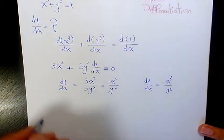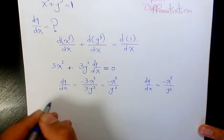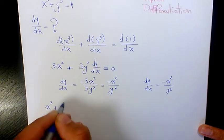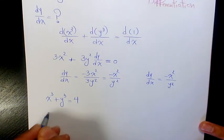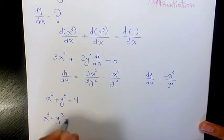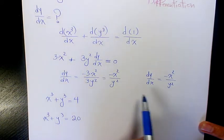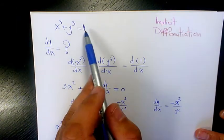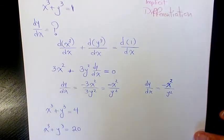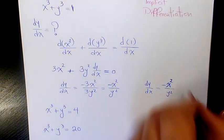You can imagine if you have x³ + y³ equals to 4 for example, or equals to 20, you would get exactly the same answer to this question because on the right hand side we have a constant number. So that's the answer to this question.